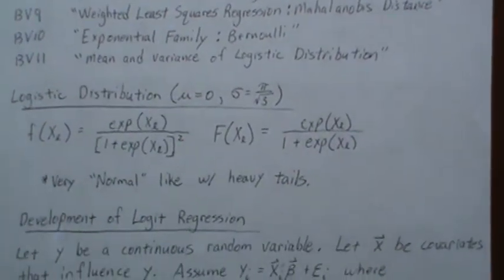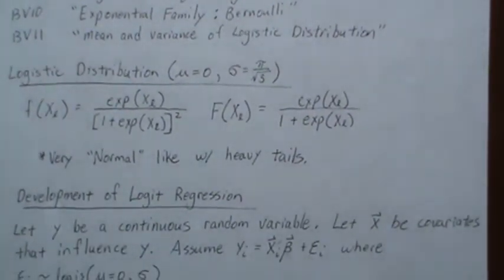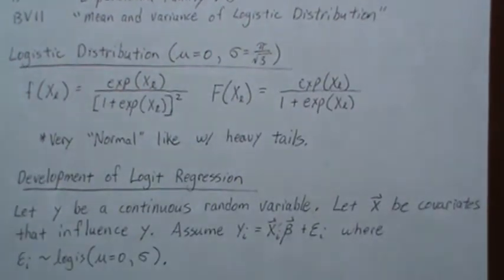Now the general development for logistic regression is we assume Y is a continuous random variable. I know you're saying, well wait, logistic regression deals with binary variables, and you're correct. But also remember that logistic regression is about two centuries old, 190 years or so, and it developed with a continuous random variable.